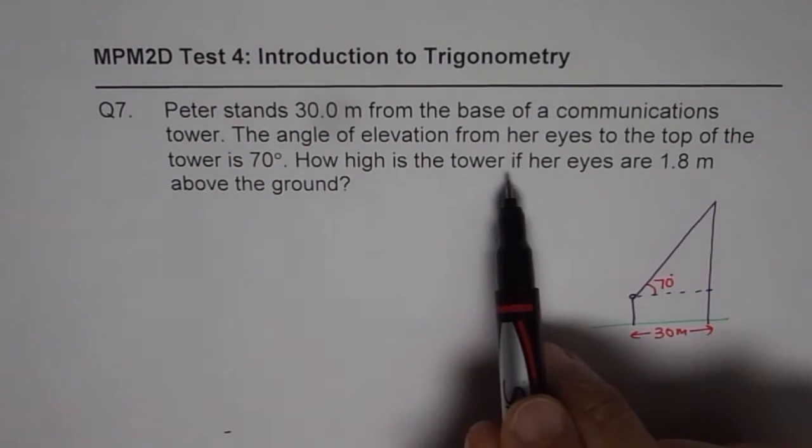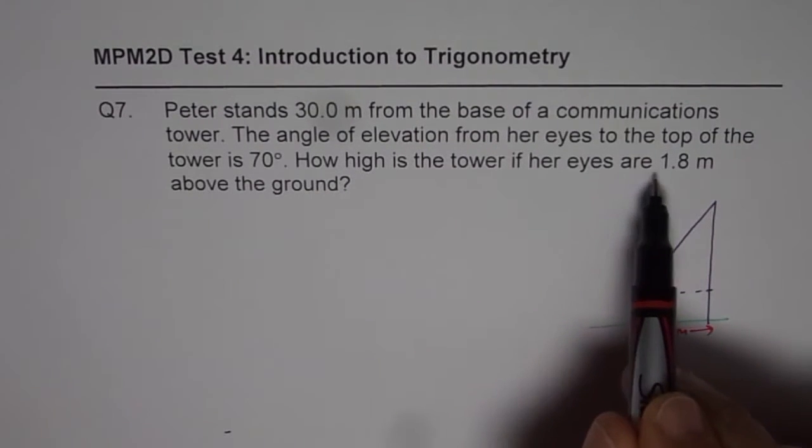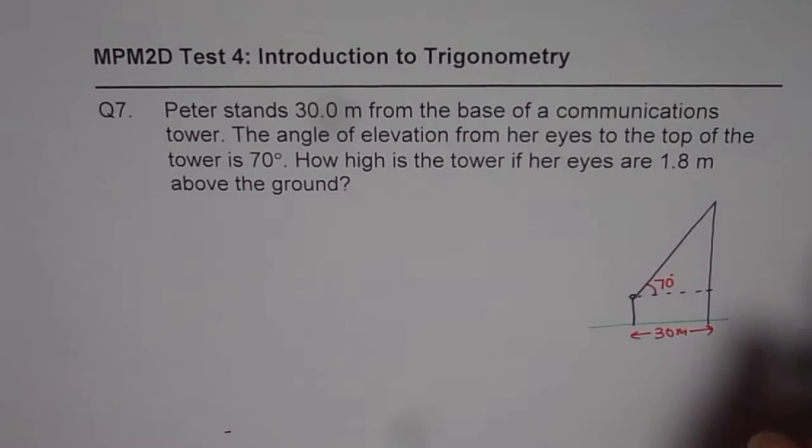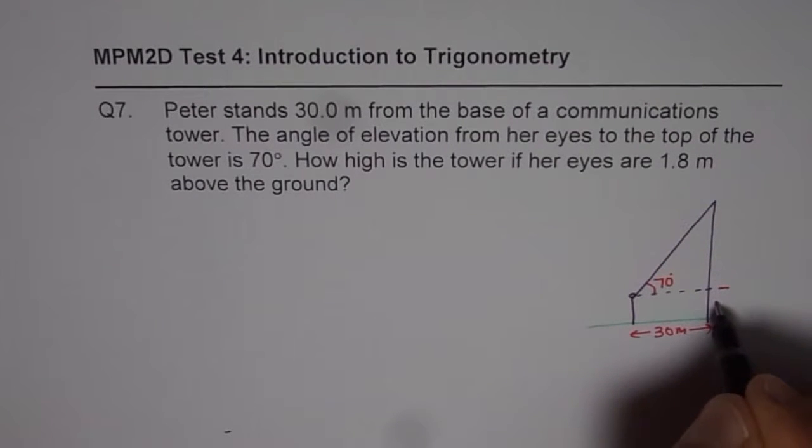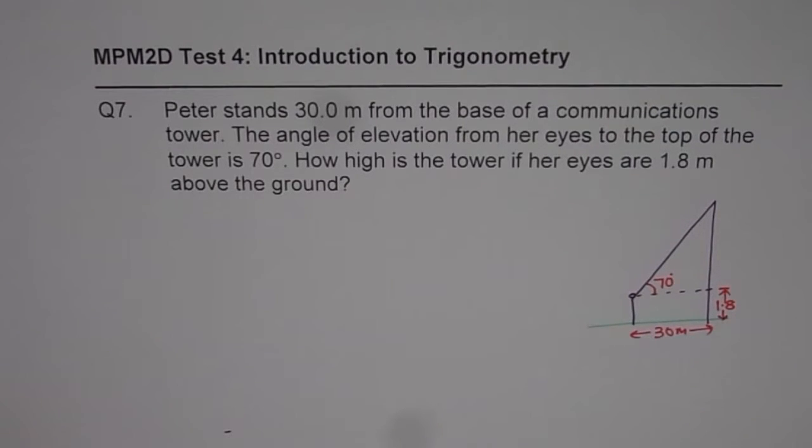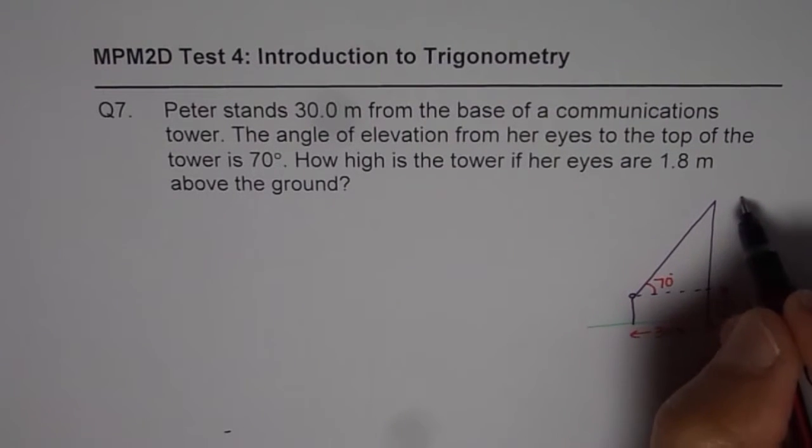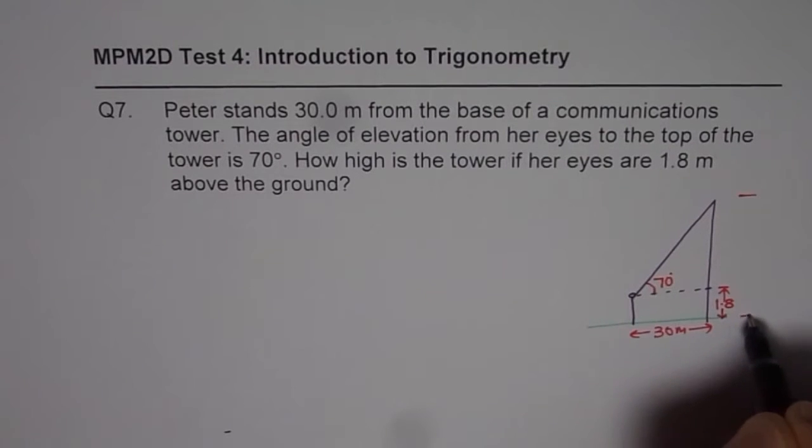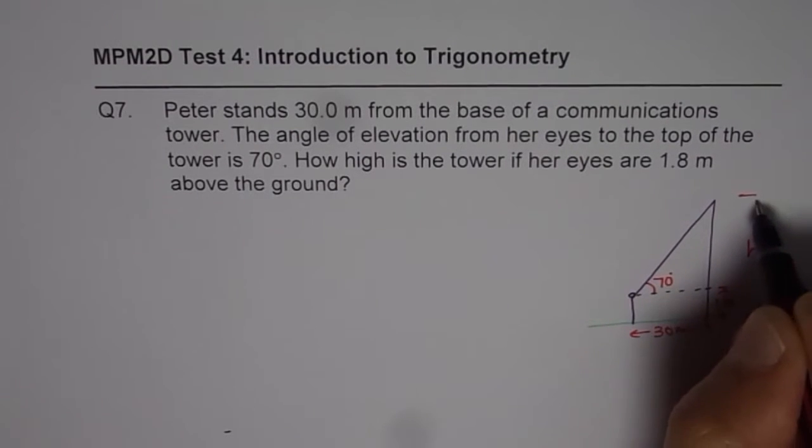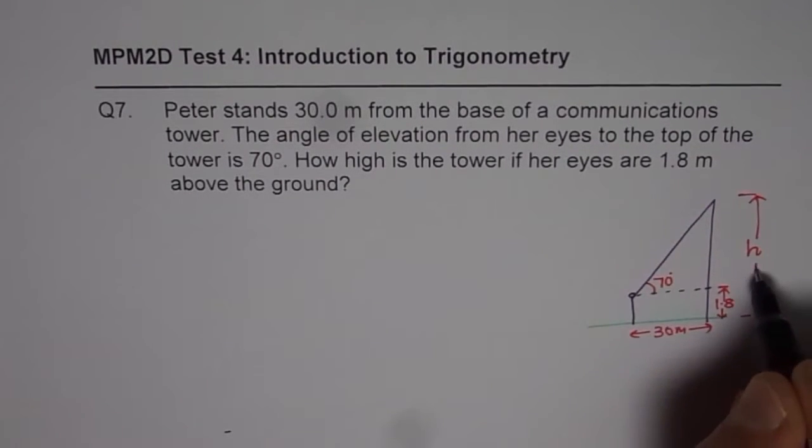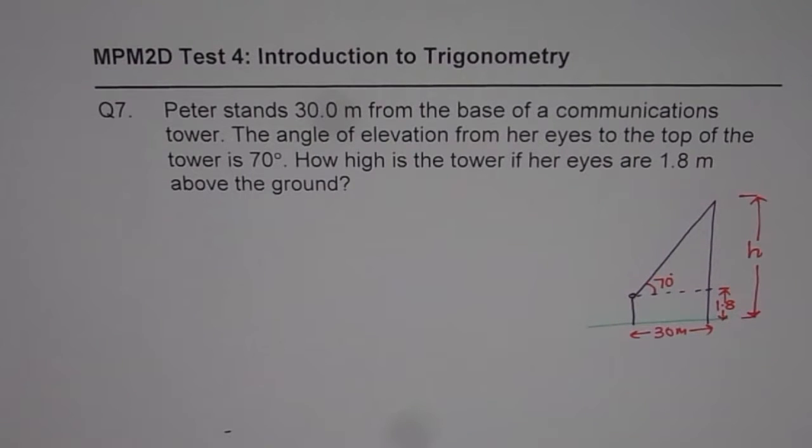How high is the tower if our eyes are 1.8 meters above the ground? So let us say this is 1.8 meters. We have to find the height of the tower. That means this is the total height of the tower. That is what we need to find.